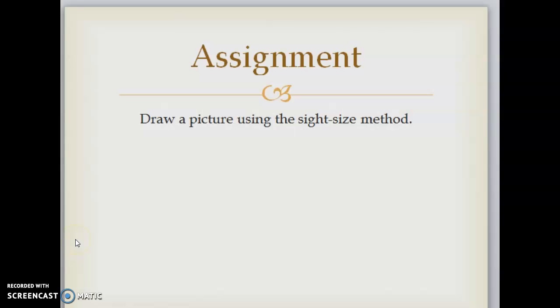So for your assignment, I want you to draw a picture using the sight size method. You're going to choose a subject and you're going to be far enough away from it that it appears to be the same size as the drawing that you're going to be putting on your piece of paper. If it's a big object, you're going to need to be farther away from it. If it's a close-up object that's the same size as your paper, then you're going to want to have it right next to your paper.